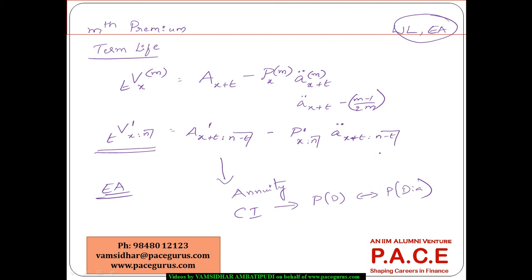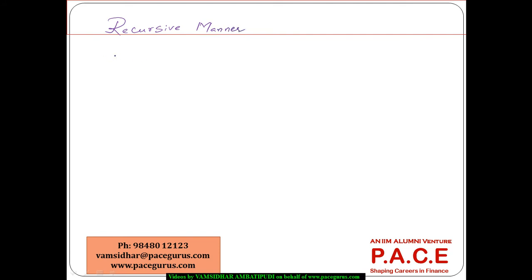In net premium reserves, the easiest computation for whole life and endowment assurance uses a direct application of the ratio of two expected present values of annuities. However, for Mthly premiums and term life policies, similar simplification is not possible and we must stick to the basic principle: expected future value of claims payment minus expected future value of premiums received. The same calculation can also be done in a recursive manner.